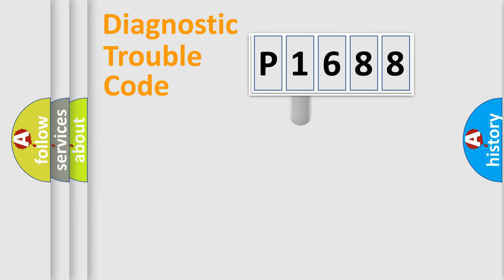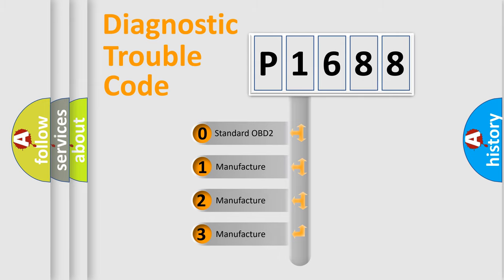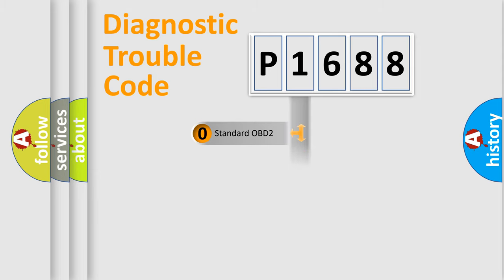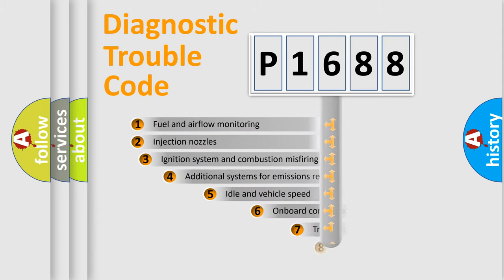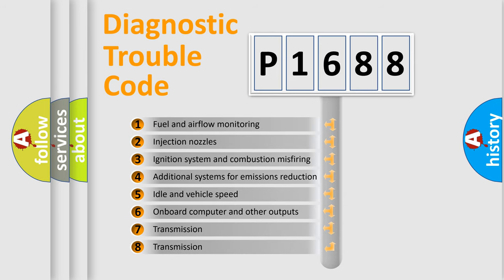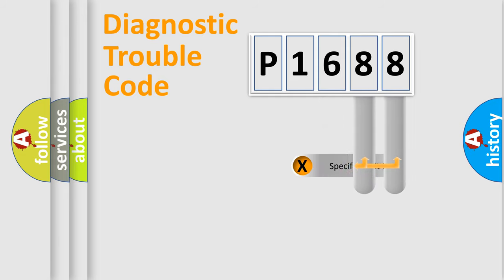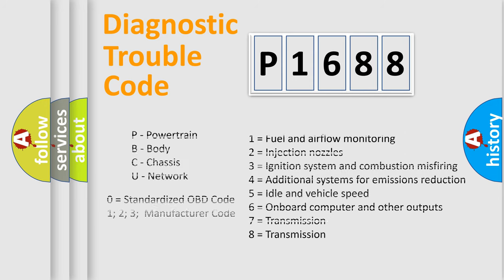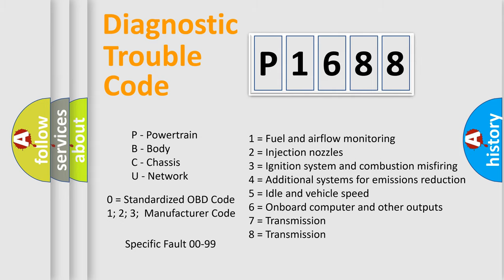This distribution is defined in the first character of the code. If the second character is expressed as zero, it is a standardized error. In the case of numbers 1, 2, or 3, it is a more specific expression of a car-specific error. The third character specifies a subset of errors. The distribution shown is valid only for the standardized DTC code, and only the last two characters define the specific fault of the group.